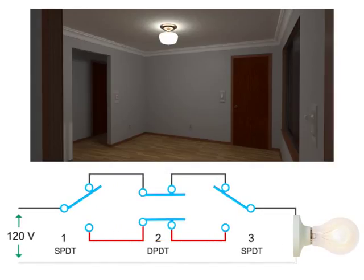In this four-way circuit example, we have two single-pole double-throw switches on the left and right, and a double-pole double-throw switch in the middle.